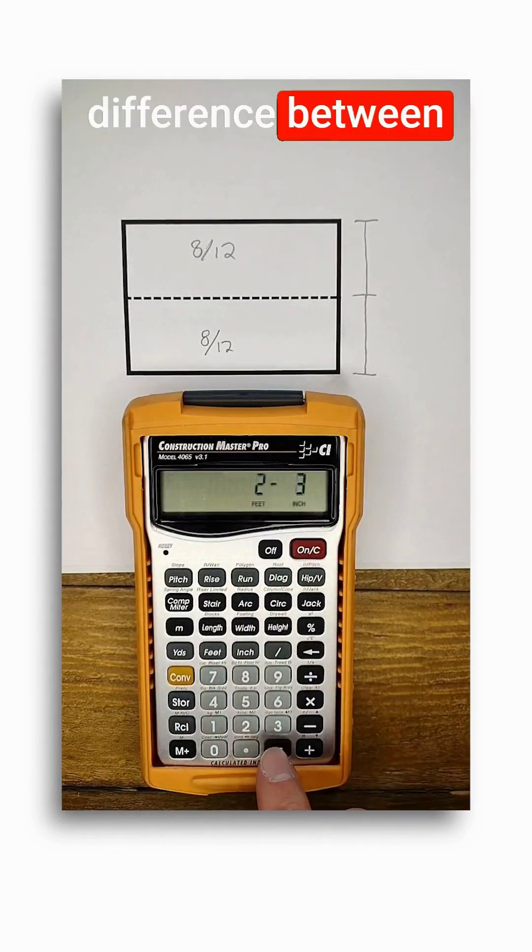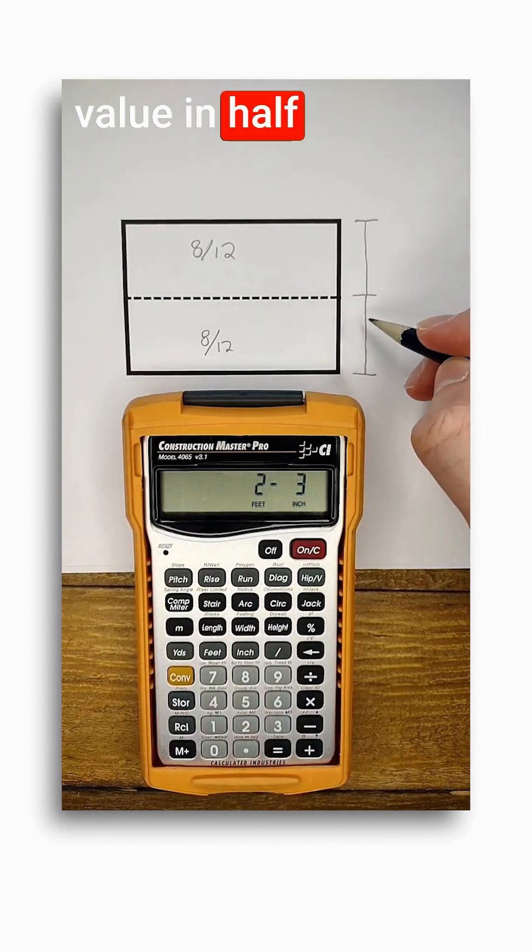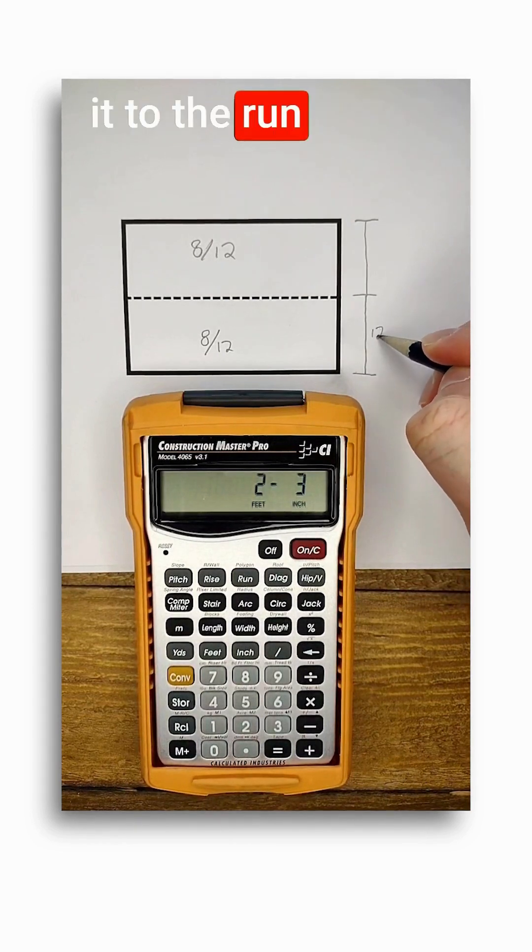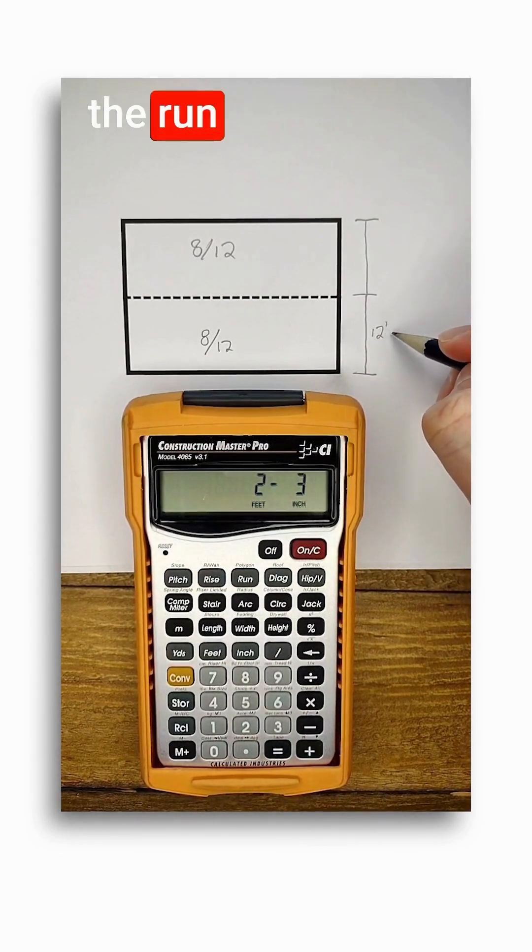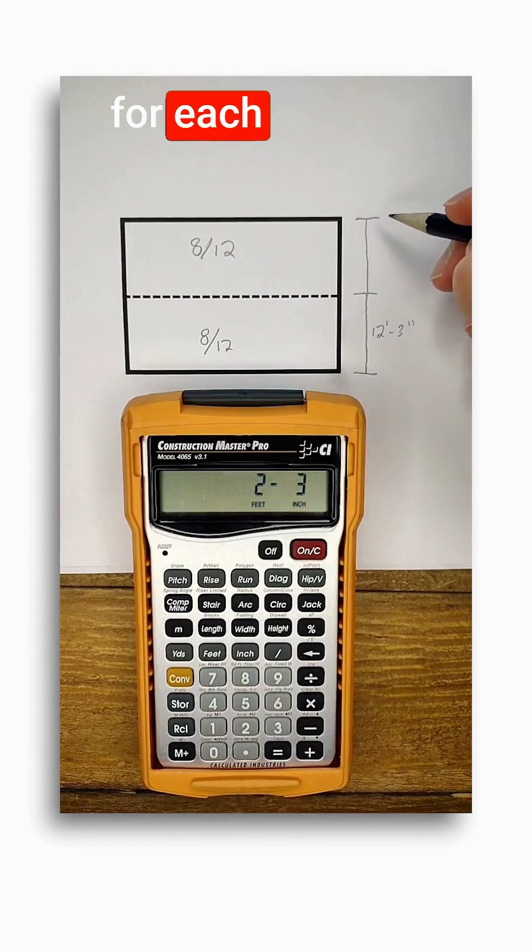Now this value is the difference between the runs of my two roof sections. So I'm going to divide that value in half and add it to the run of one side and subtract it from the run of the other side. Here I started with a 10 foot run for each section.